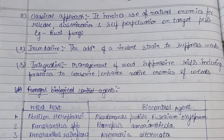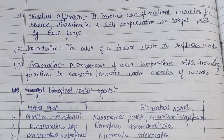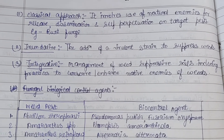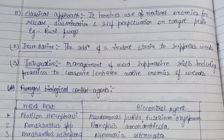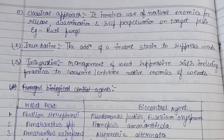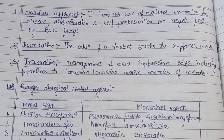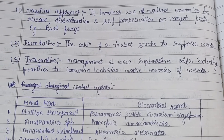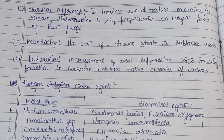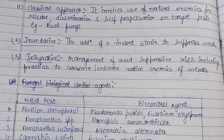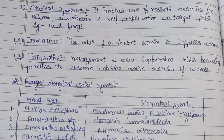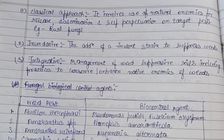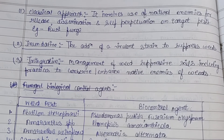The first is the classical approach, which involves the use of natural enemies for release, dissemination, and self-perpetuation on the target pest — for example, rust fungi. Here, we use natural enemies that are naturally present in the environment, without using genetically engineered or genetically modified organisms.